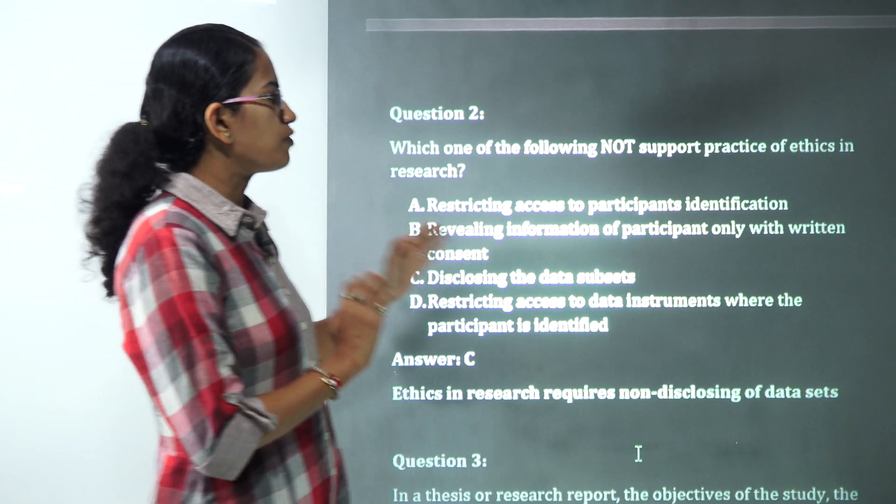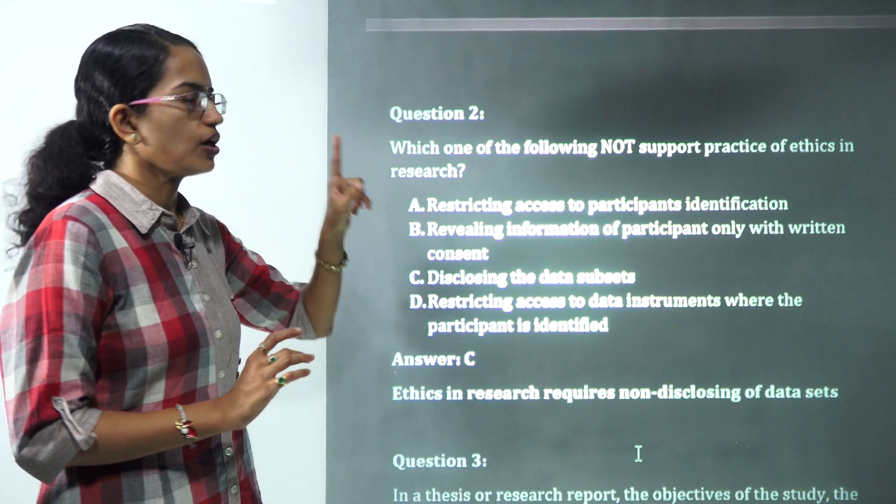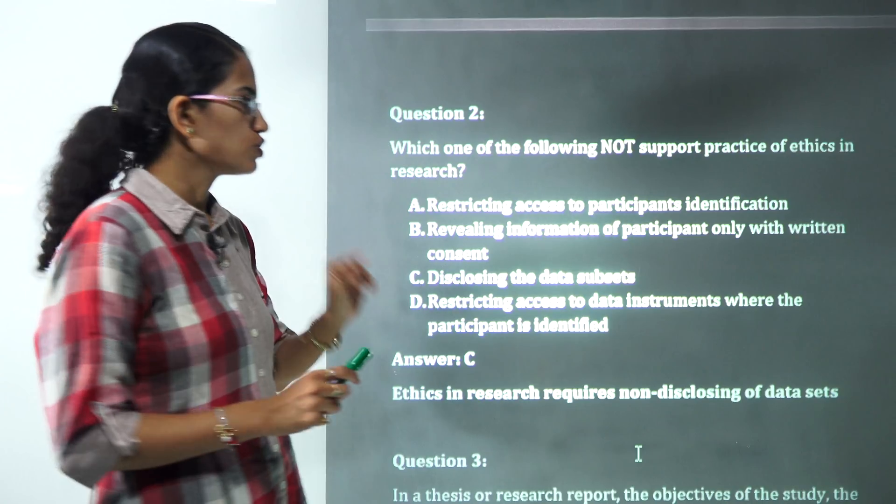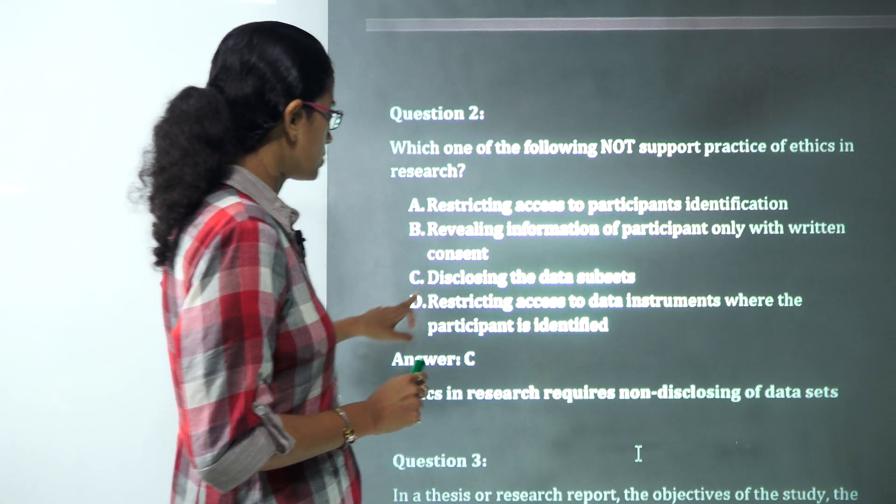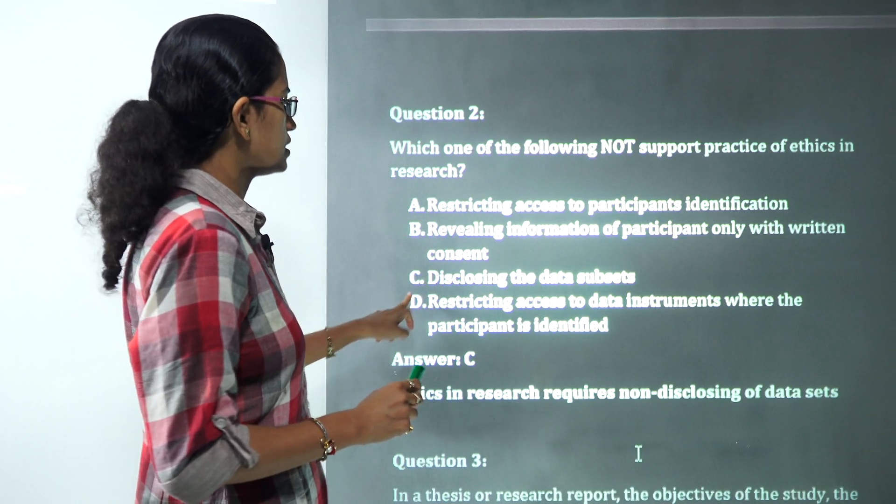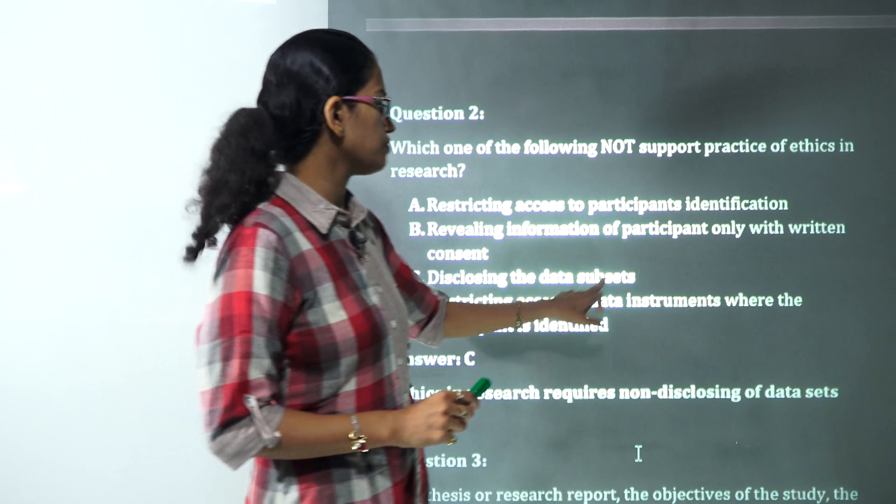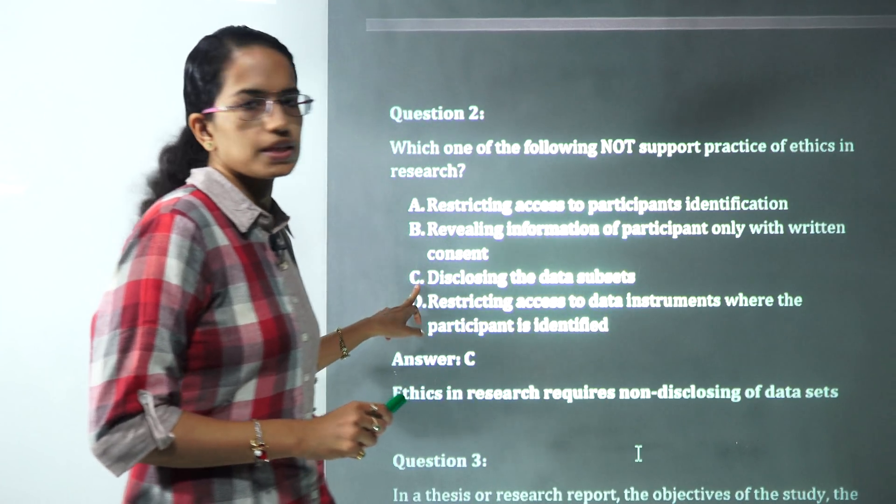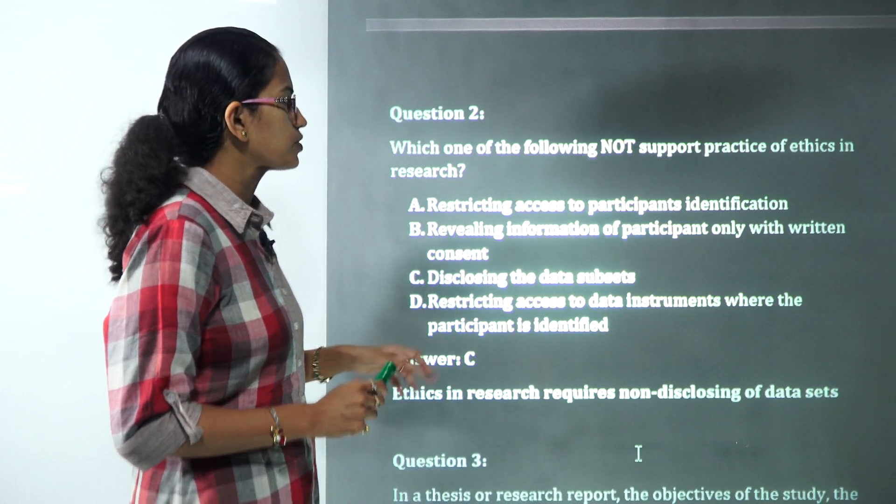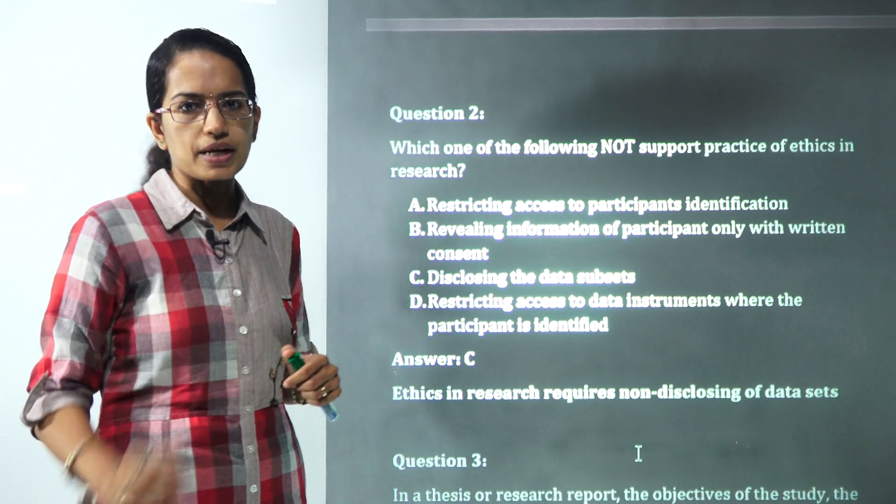The next question talks about which of the following does not support the practice of ethics in research. Make sure the question says not. All of those explain the ethics in research except C. It's basically the non-disclosure of data subsets. That would be the correct answer here.